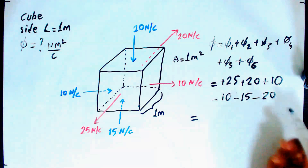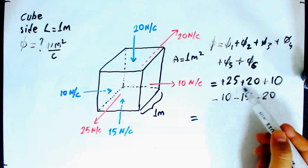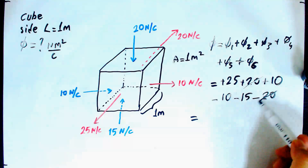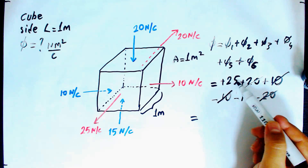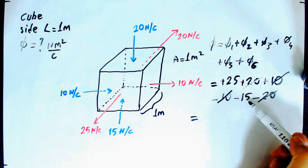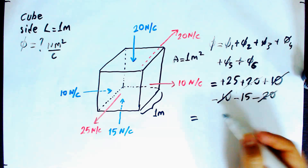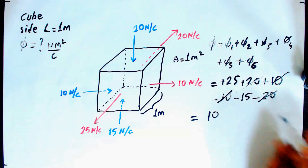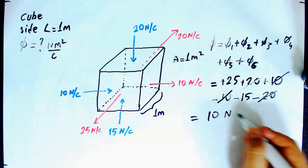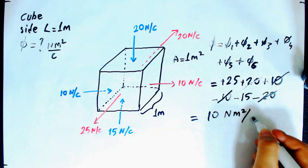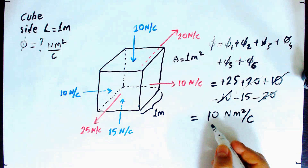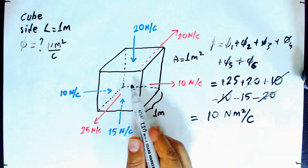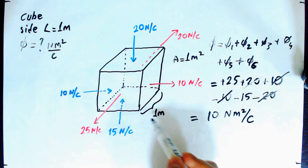Adding them all: the 20s cancel, the 10s cancel, and plus 25 minus 15 makes 10. So the total net flux through this cube is 10 Newton meter squared per Coulomb.